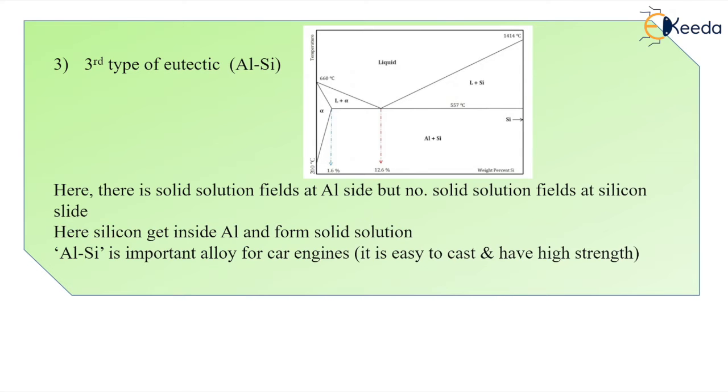If we see this third type eutectic, we are getting it in the aluminum and silicon alloy. Here, you can see this is the phase diagram for aluminum-silicon.